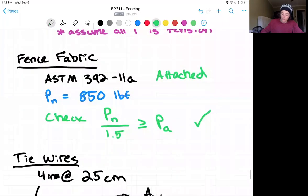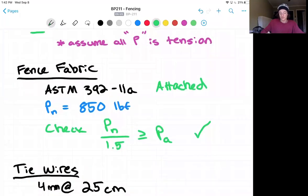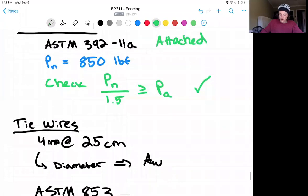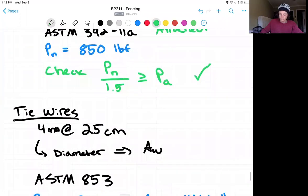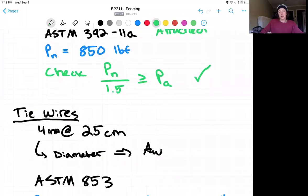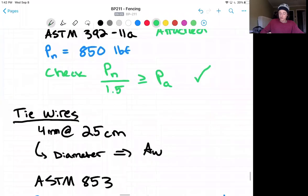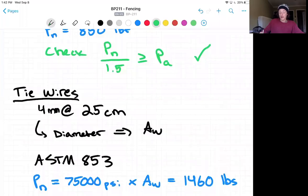Now moving on to our tie wires, the details specify 4 millimeters at 25 centimeter spacing. So first, we're going to go and find the diameter of that wire. So the diameter of a 4 millimeter wire we'll take as AW. And then using the ASTM standard 853 for steel tie wires, we'll take the 75,000 PSI value times 0.5 times our area of the wire to get a 41,460 pound capacity.